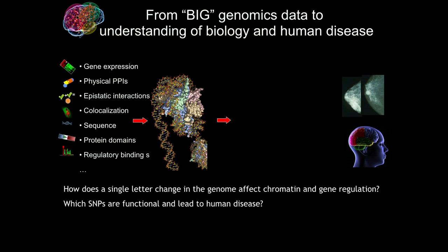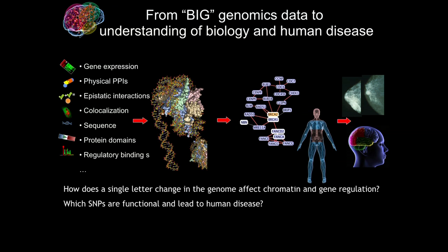Once we understand which proteins are expressed in every tissue and cell lineage and whether these proteins are linked to human disease, can we understand how these proteins interact in every disease-relevant tissue? We'll talk about how different pathways and networks change in the brain, kidney, and liver — and how we can understand this on the network level from often non-tissue-specific or very heterogeneous data.